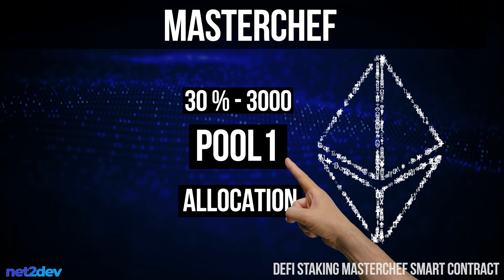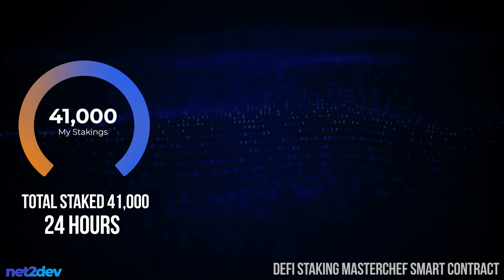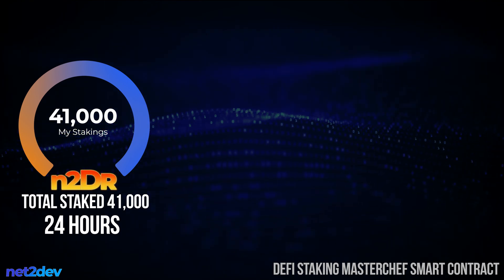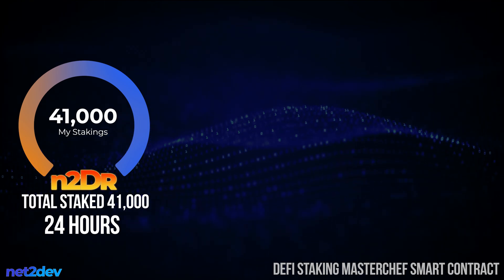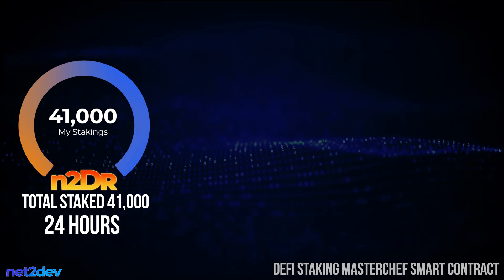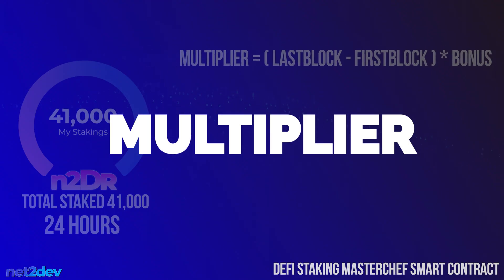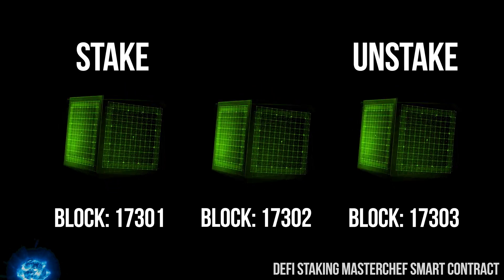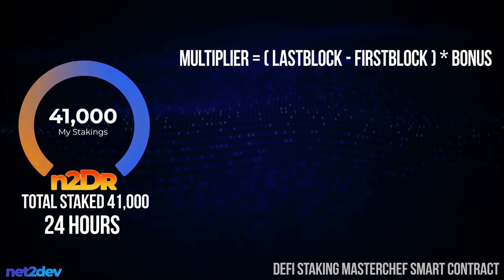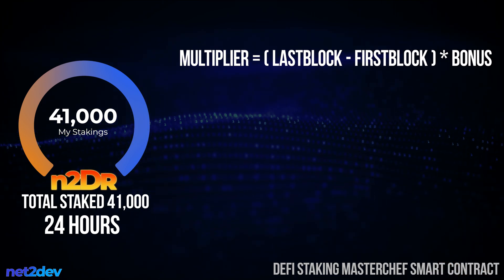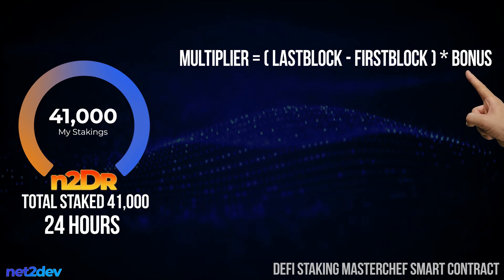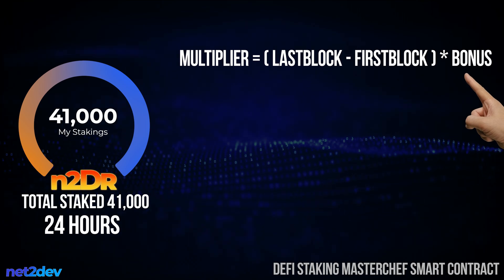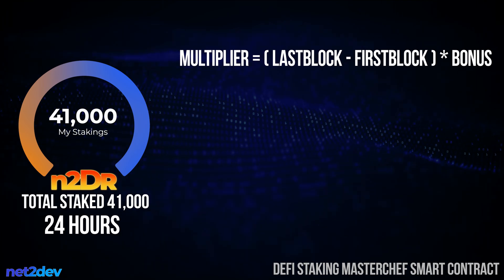Now let's talk about the actual emission rate — how many tokens will I receive as a staker. Let's take a look at the MasterChef staking smart contract formula, broken down piece by piece. Let's assume a single staking pool where I stake 41,000 N2DR tokens for 24 hours. The first formula we need to solve is the multiplier — which is the number of blocks generated during the staking period. We get this by subtracting the block number when I initially staked from the block number when I unstake, then multiplying by a bonus value. For now, let's keep the bonus at 1.